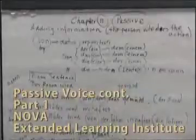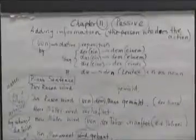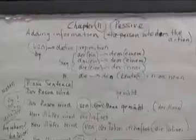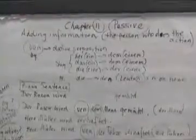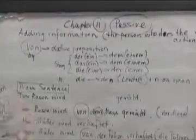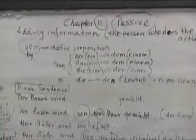Chapter 11 Passive Voice Continued. Today we are going to add information. We are going to add the person or the thing who does the action. In other words, the person or thing who acts upon the item that receives the action.